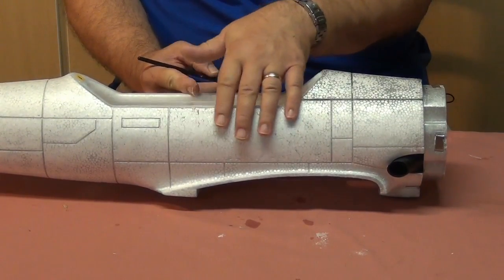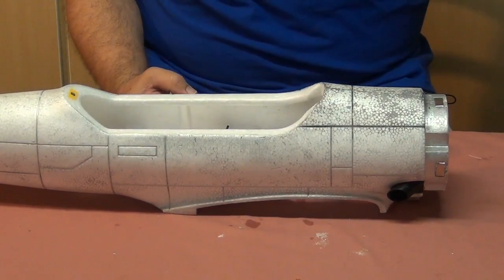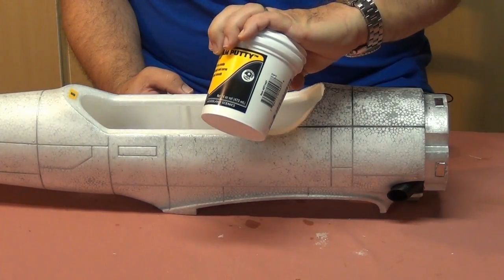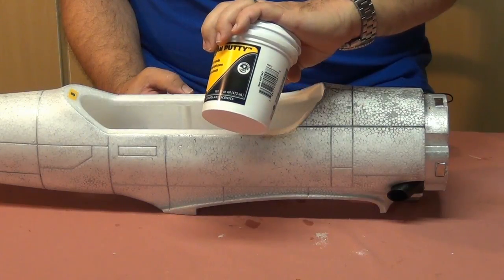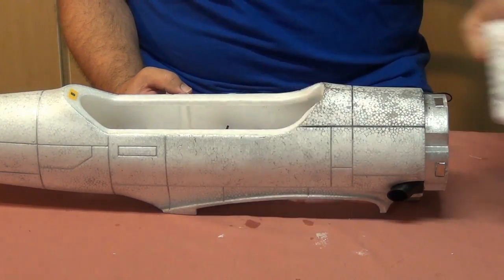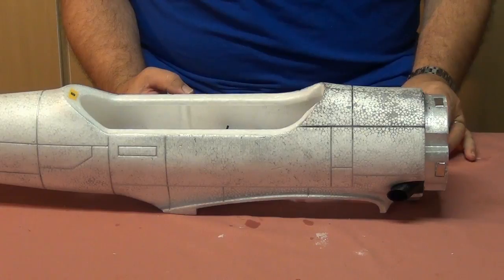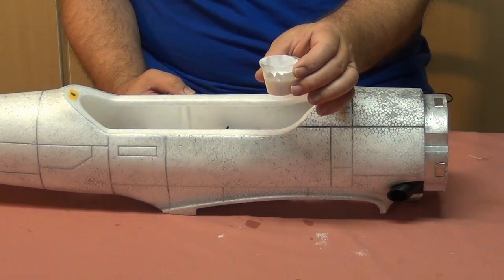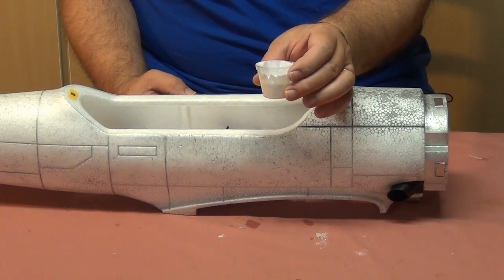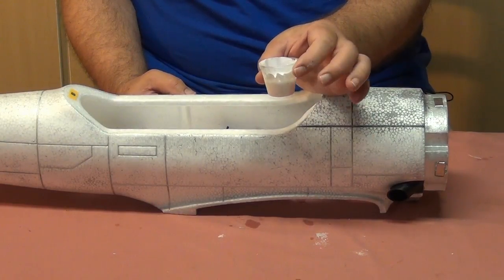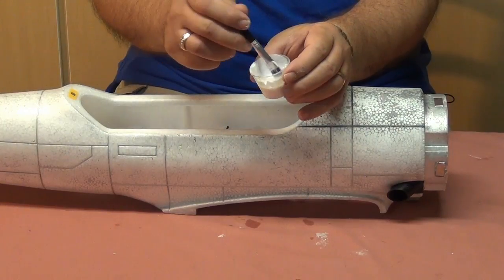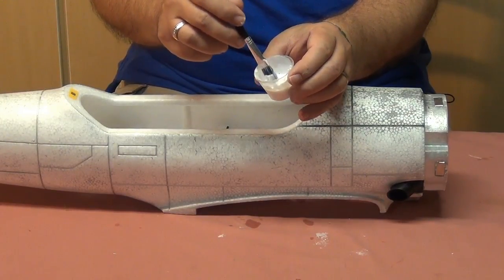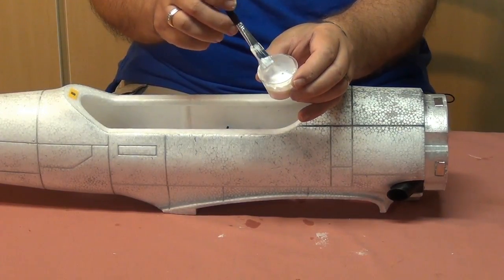The way that I did that, I used the same foam putty. I took a gob from the tip of my finger and put it in a little epoxy mixing cup here and dropped in a couple of drips of water. You don't need much water, just a drip at a time until you get a consistency that's kind of like school paste.